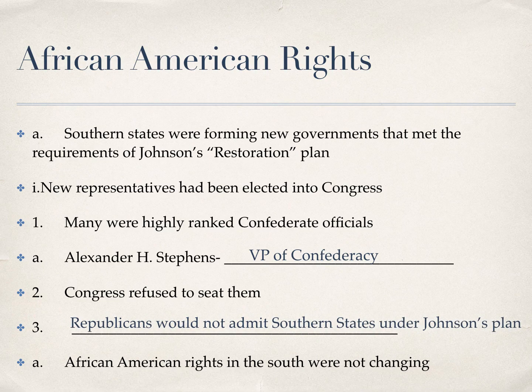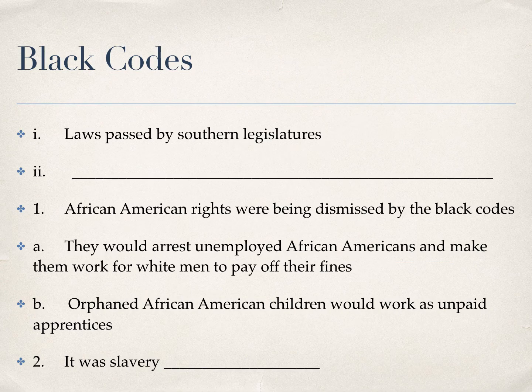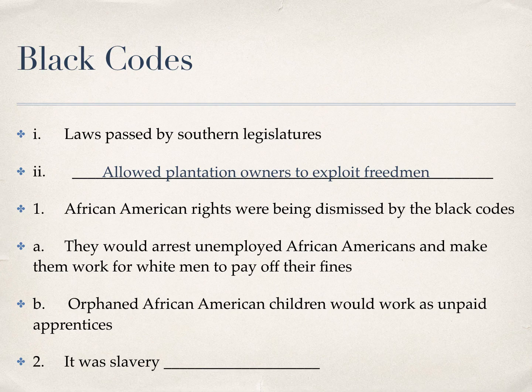Republicans would not admit southern states under Johnson's plan, so you have Congress basically fighting against the president as to how to deal with this Reconstruction issue. On top of that, Andrew Johnson was not interested in giving African Americans any rights in the South. In fact, what he actually allowed to happen were laws passed by southern legislatures — known as black codes. These black codes allowed plantation owners to exploit freed men. To exploit someone means to take advantage of them, and that's exactly what black codes did.